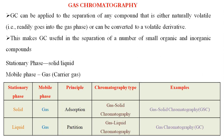Gas chromatography is a type of chromatography technique mainly used for separation of a compound that is naturally volatile or easily converted to a volatile derivative. GC is useful in separation of a number of small organic and inorganic compounds.